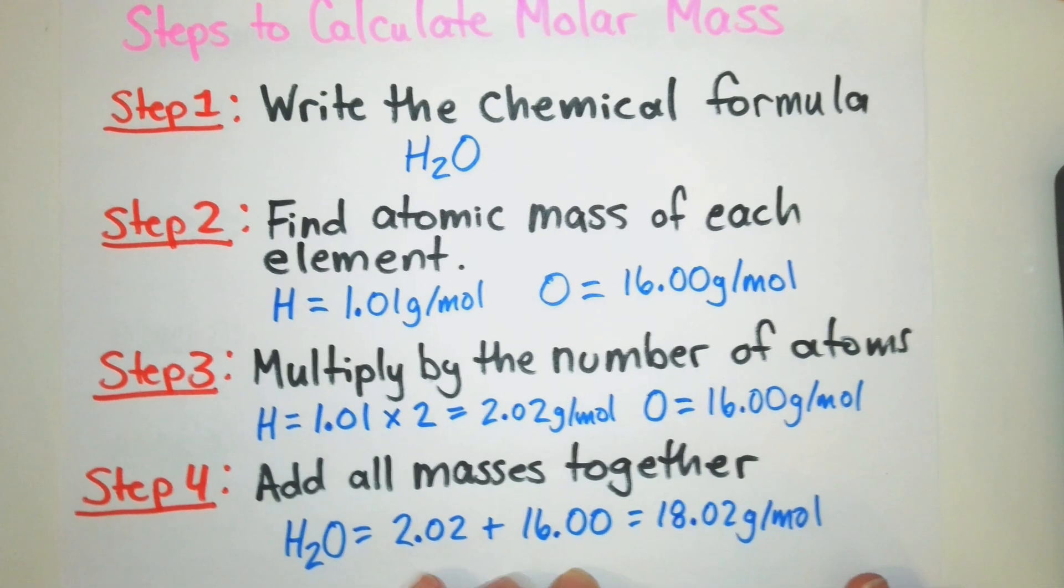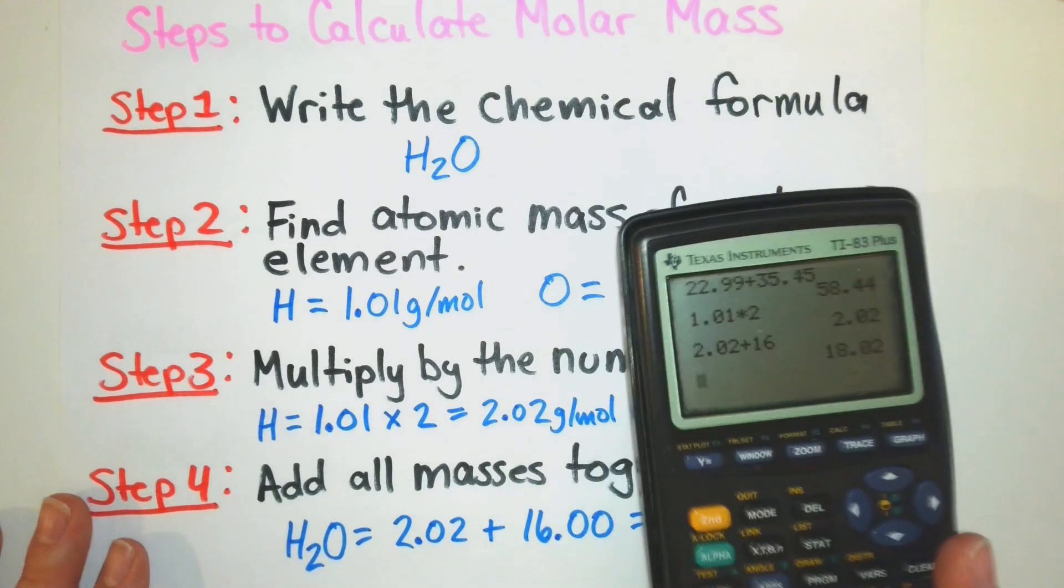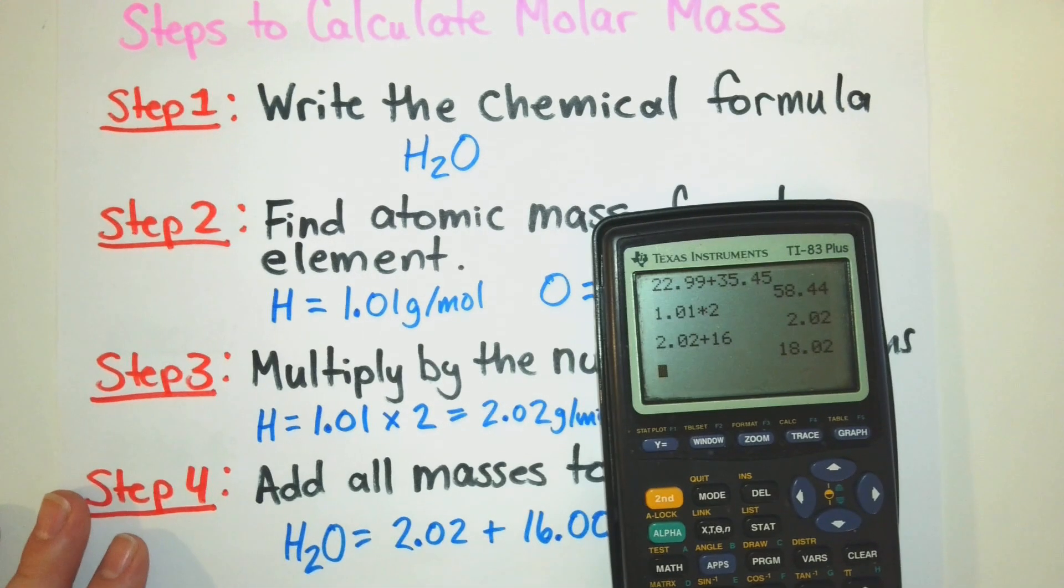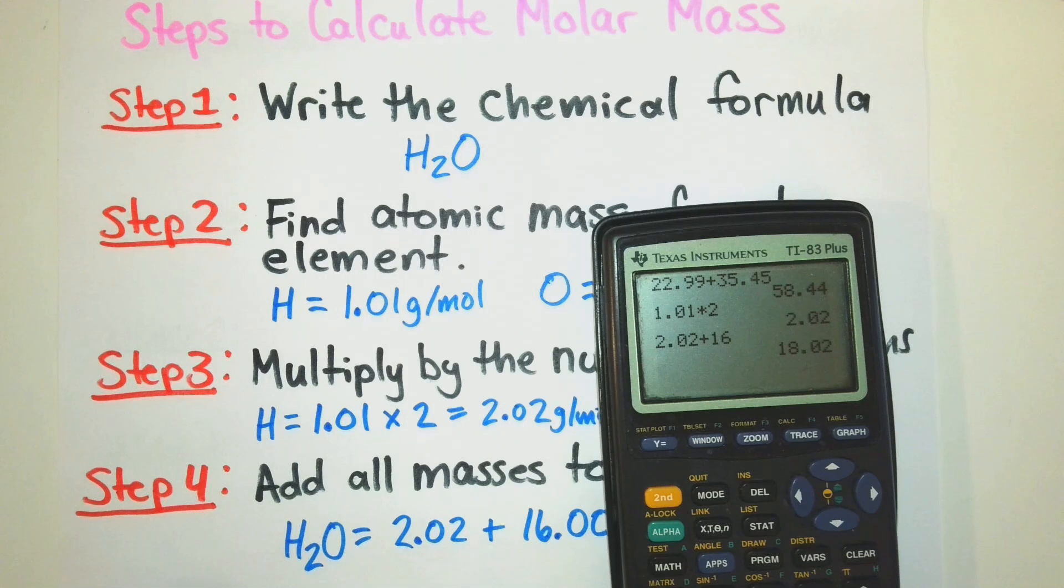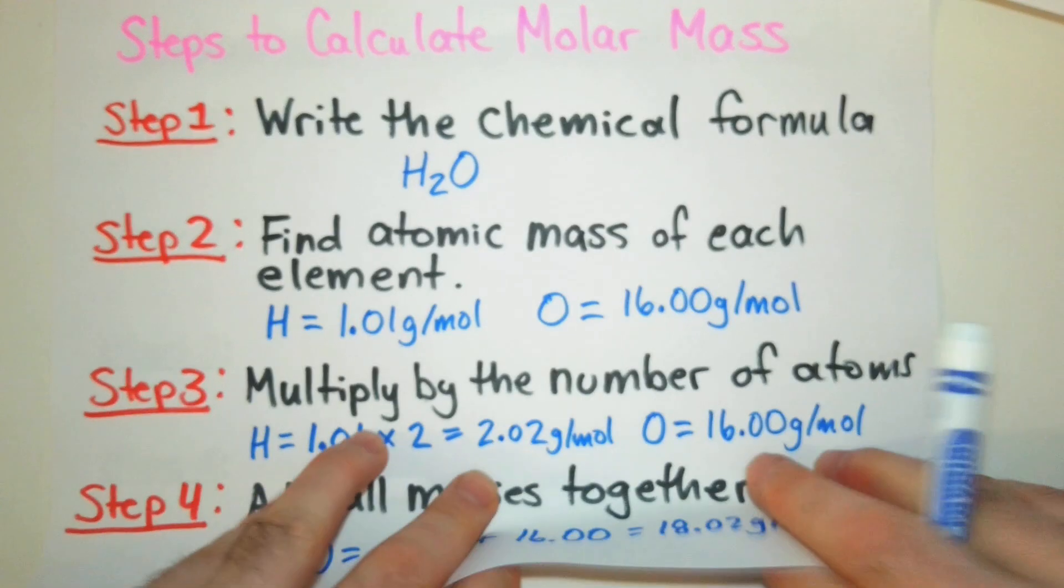Another tip for you is when you're using a calculator on some of your problems, get a graphing calculator. I know we could use our cell phone, but it's easy to get distracted. Even if there are some pretty good apps out there, it can be kind of clunky working with your cell phone. So I recommend getting a dedicated scientific calculator. I think it helps. It really does.